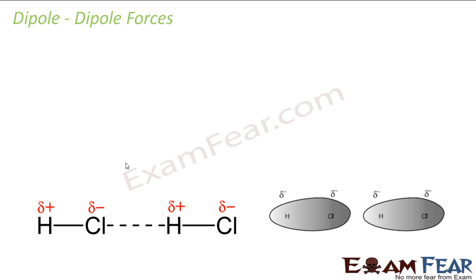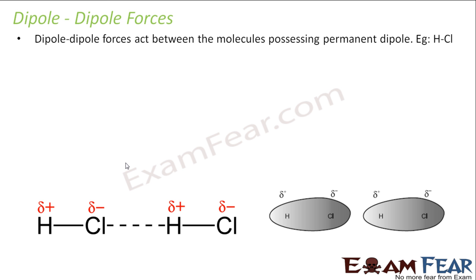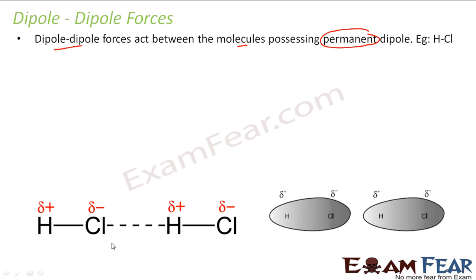The next force is the dipole-dipole force. As the name suggests, this dipole-dipole force acts between molecules that have a permanent dipole. For example, HCl has a permanent dipole — it is a polar molecule, where one end has a slight negative charge and the other has a slight positive charge because Cl is more electronegative. There is a permanently slight negative charge on one side and a permanently slight positive charge on the other, so there is a permanent force between these two.